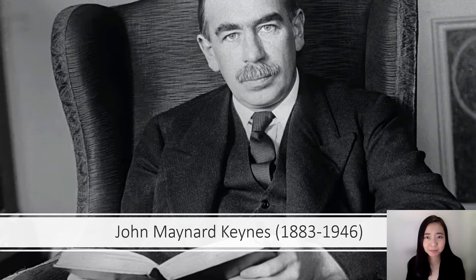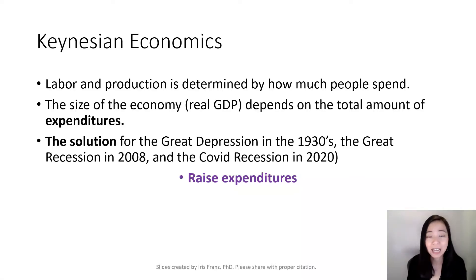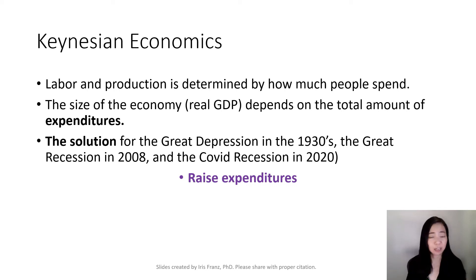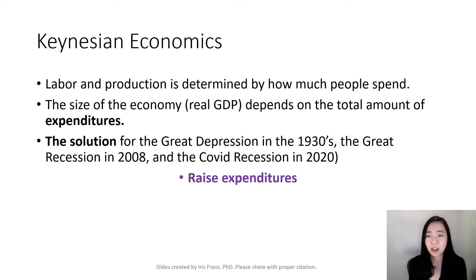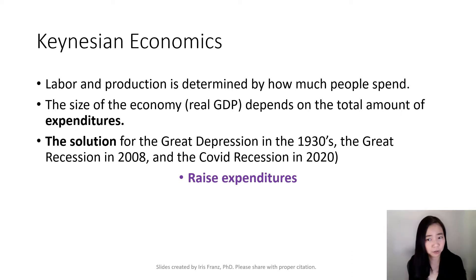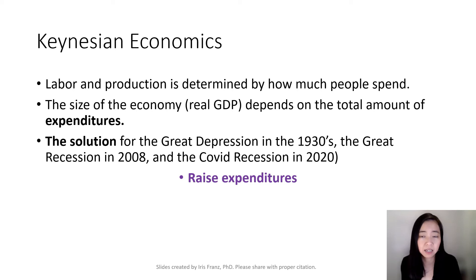The aggregate expenditure model was originated by John Keynes, a British economist. Here is his major argument: labor and production is determined by how much people spend, and the size of the economy depends on the total amount of expenditures. If we don't spend, if we don't consume, then firms are not going to produce. If firms don't produce, they will not hire workers. Likewise, if the government does not spend, if the government doesn't purchase goods and services, then firms are not going to produce. If firms don't produce, they are not going to hire laborers or increase production. And therefore, the size of the economy depends on the total amount of expenditures.